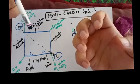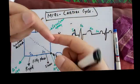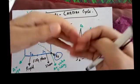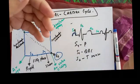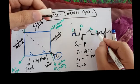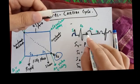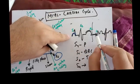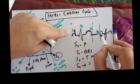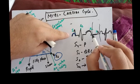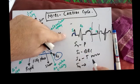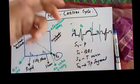S2 occurs during the T wave — ventricular repolarization causes relaxation, and closure of the semilunar valves produces S2. S3 is produced during the TP segment — after the T wave and before the next P wave. So in summary: S4 → P wave, S1 → QRS, S2 → T wave, S3 → TP segment.